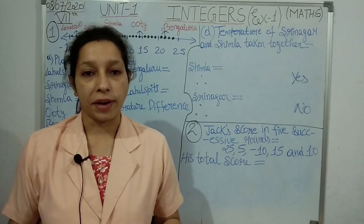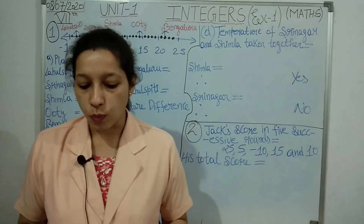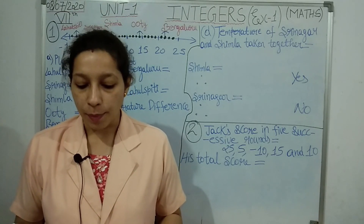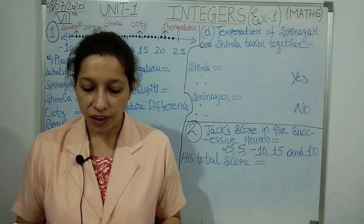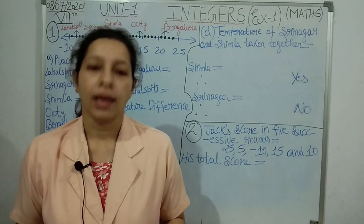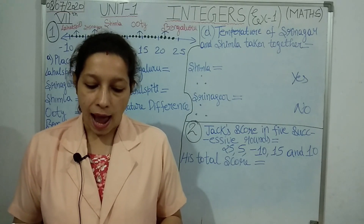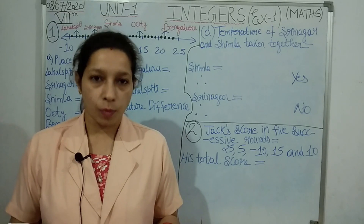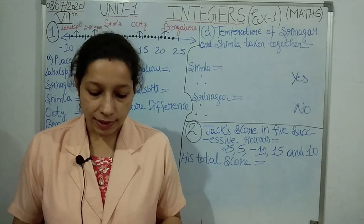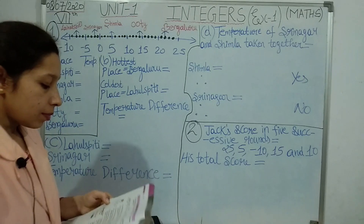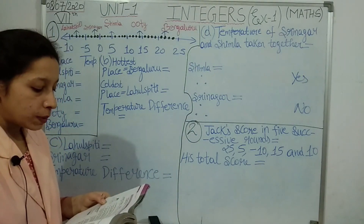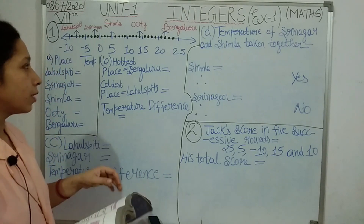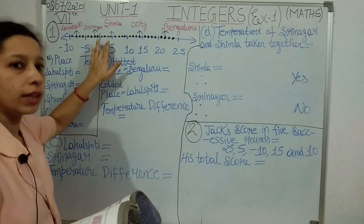Okay students, I hope you are ready. Let's see exercise 1.1, question number one. The question says: following number line shows the temperature in degree Celsius at different places on a particular day. You can see one number line is given, and on that number line a few points are plotted and also some places are written. I have drawn the number line here so that I can explain the points.